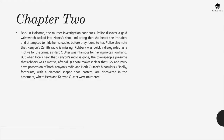Back in Holcomb, the murder investigation continues. Police discover a gold wristwatch tucked into Nancy's shoe, indicating she heard the intruders and attempted to hide her valuables. Police also note that Kenyon's radio is missing. Robbery is quickly disregarded as a motive, as Herb Clutter was infamous for having no cash on hand — but when locals hear the radio is gone, the townspeople presume robbery was a motive after all. Capote makes it clear that Dick and Perry have possession of both Kenyon's radio and Herb Clutter's binoculars. Footprints with a diamond-shaped shoe pattern are discovered in the basement where Herb and Kenyon Clutter were murdered.